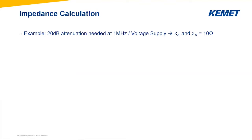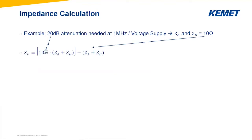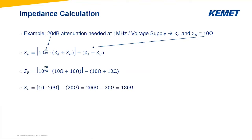Let's take an example: we need 20 dB attenuation at 1 MHz on a voltage supply, which has ZA = ZB = 10 ohms. Inputting these values into the formula, the calculation gives us ZF = 180 ohms. This means I need a choke with 180 ohms impedance at 1 MHz — which is very simple to find because this value is always given in the datasheet.